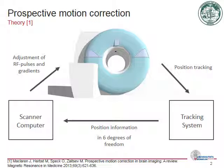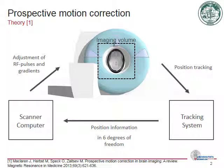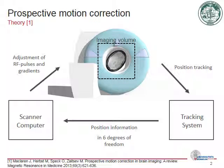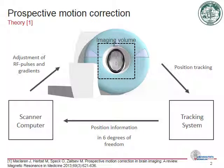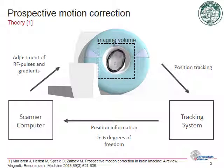Here we see our volunteer in the scanner. Now, let's assume that the volunteer moves during the acquisition. We monitor the movements with our tracking system — a small camera which is placed above the patient in the scanner bore. Tracking information in 6 degrees of freedom is then sent back to the scanner,